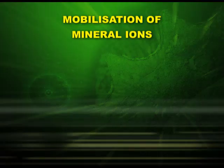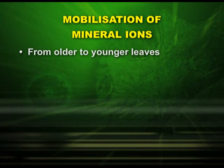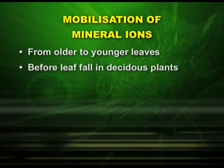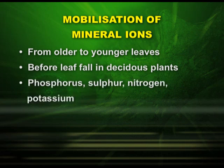In plants, mineral ions can be mobilized or immobilized. In the case of mobilization, ions are mobilized from older to younger leaves, and also before leaf fall in deciduous plants. The elements which are mobilized include phosphorus, sulphur, nitrogen, and potassium.